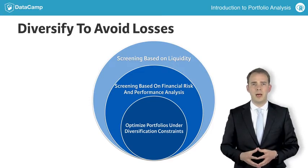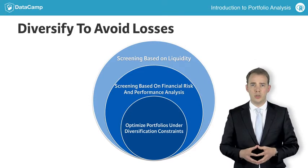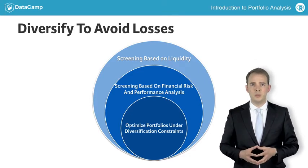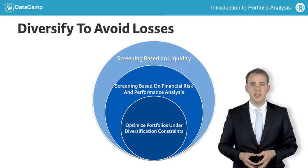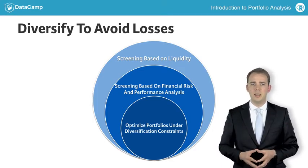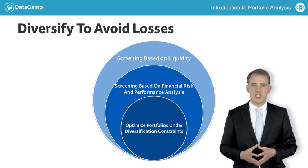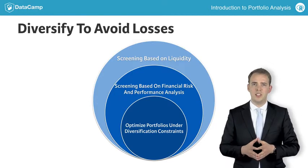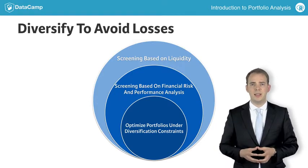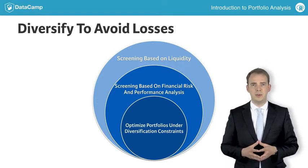Whenever you buy a stock or bond at some price, this price will change in the future. If it increases, you make a profit. If it decreases, you make a loss. It's the expectation of gains that needs to be balanced against the risk of losses.